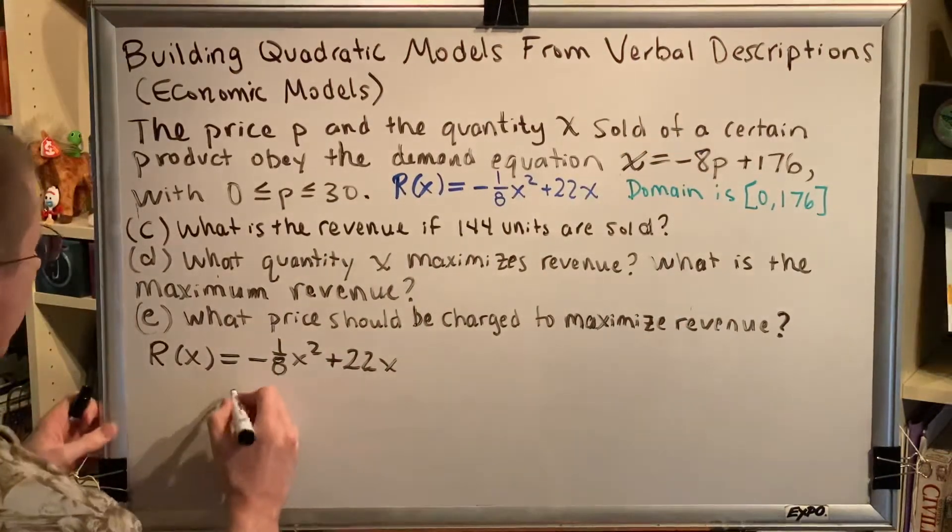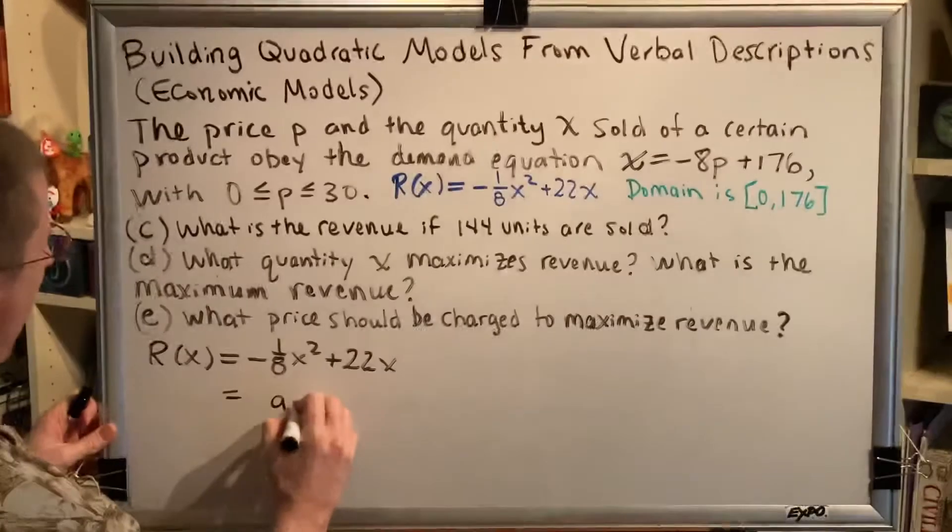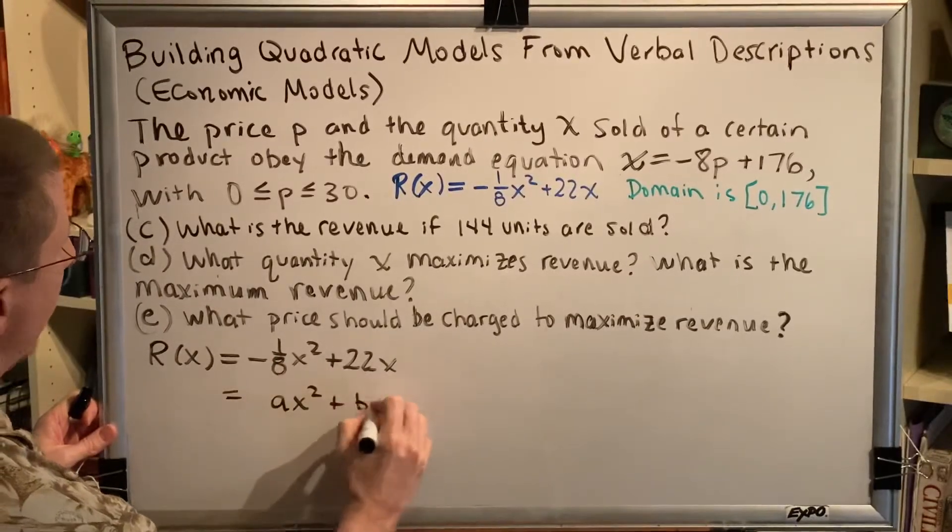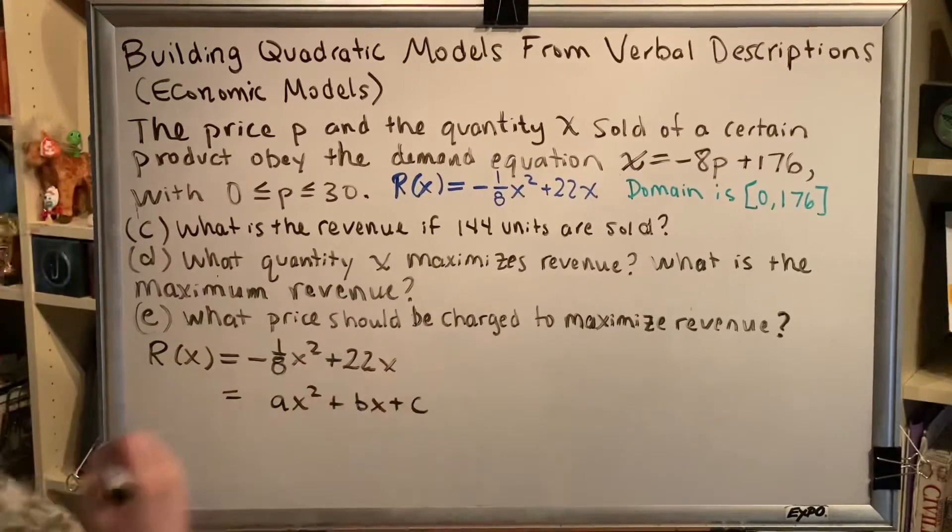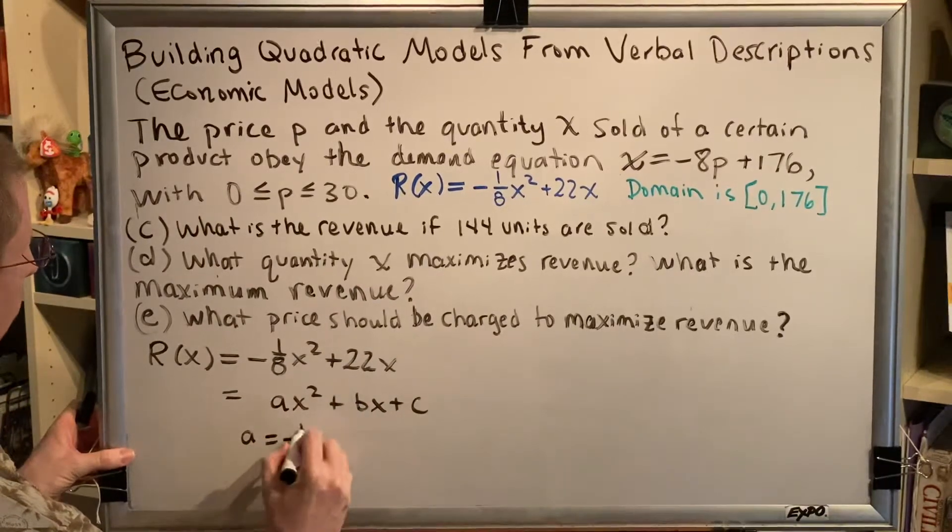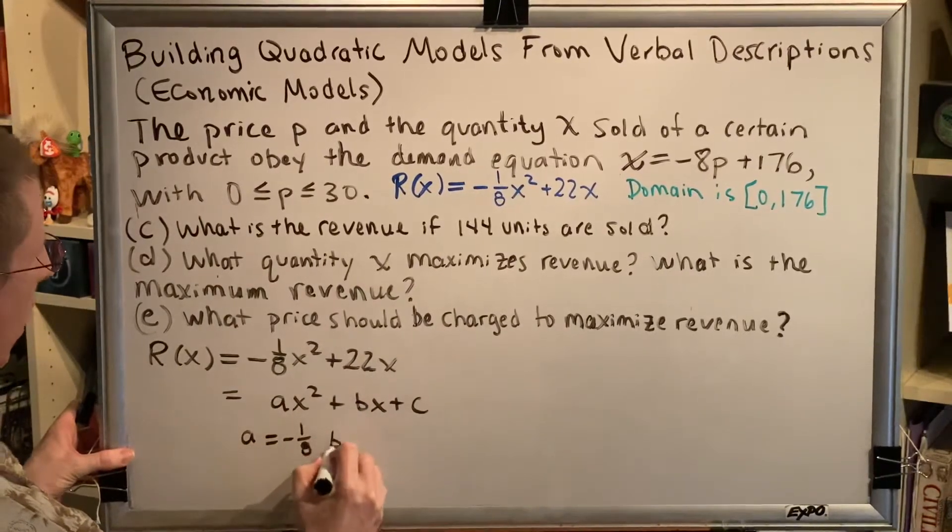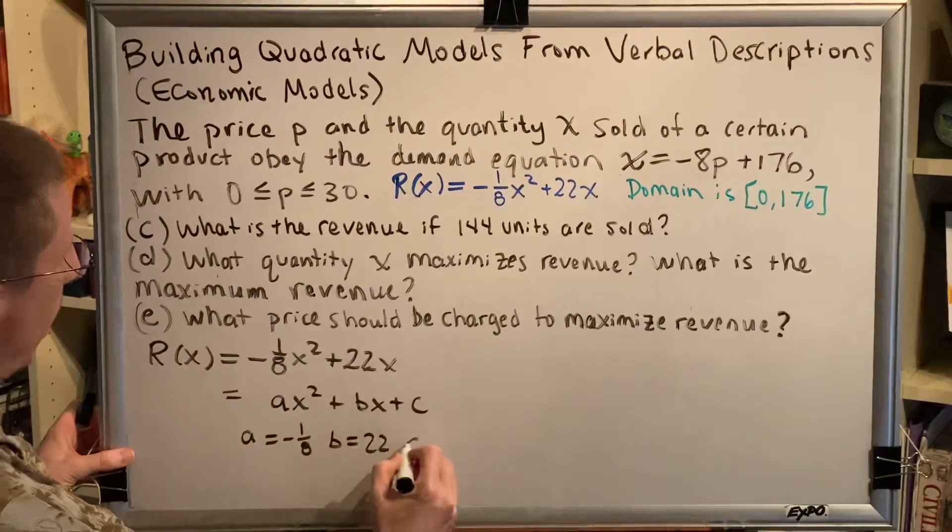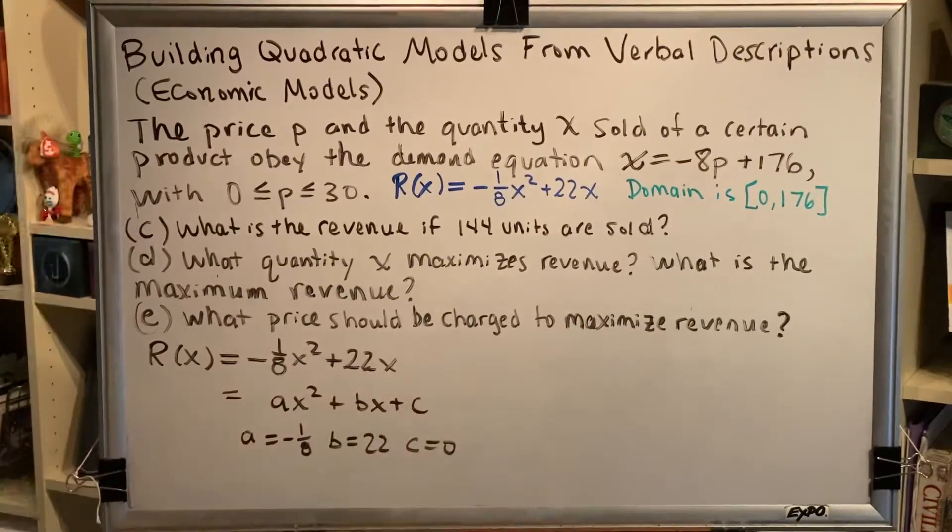verify that your equation is quadratic because if it is, the vertex will help you find the answer. So, is this quadratic? The answer is yes. AX squared plus BX plus C. And, in this particular instance, A is equal to negative 1/8,